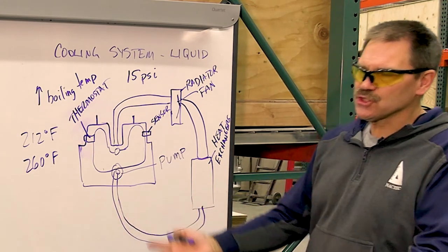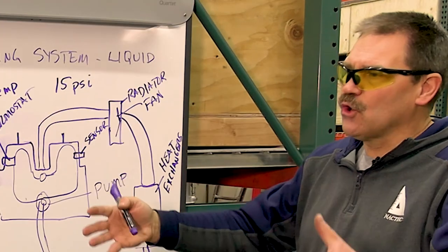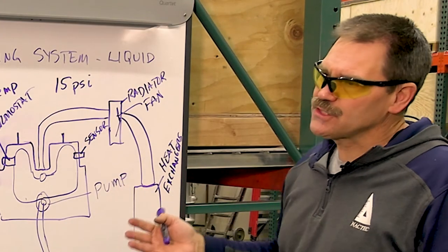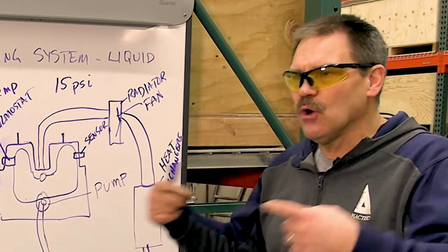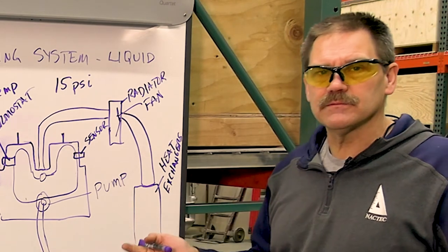Or they might have the heat exchangers. Most of the time, the heat exchangers, like on the snow machines, are up under the tunnel, above the track. So as you're going, then the liquid-cooled machines are dependent on snow hitting the heat exchanger and cooling the liquid.